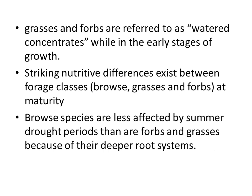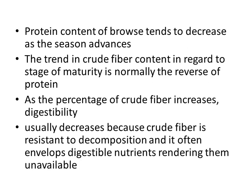Grasses and forbs are referred to as watered concentrates while in the early stage of growth. Striking nutritive differences exist between forage classes. Browse species are less affected by summer drought periods than forbs and grasses because of their deeper root system. The protein content of browse tends to decrease as the season advances, and the trend in crude fiber content with regard to stage of maturity is normally the reverse of protein.